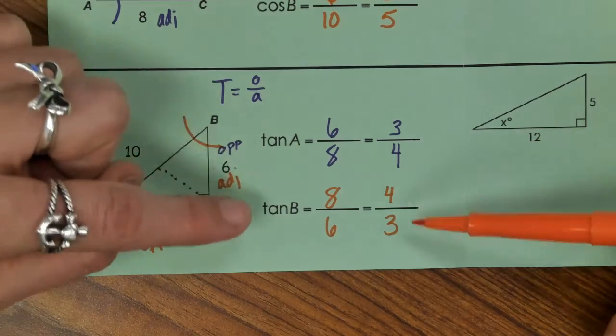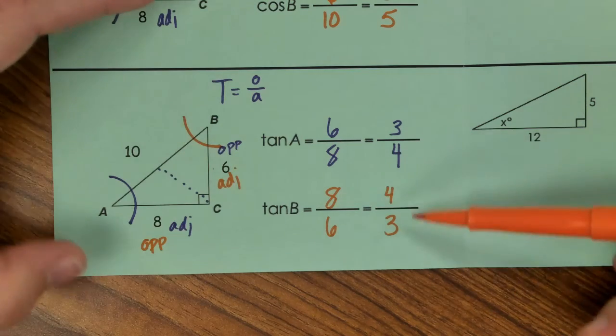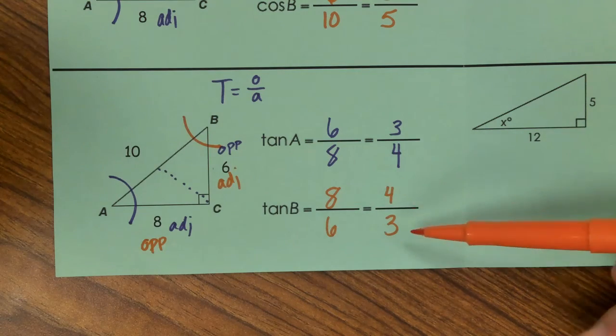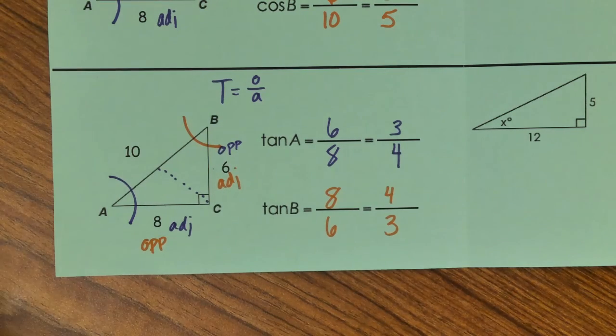And we've talked about with tangent, when you switch reference angles, you end up with the reciprocal: 3 over 4 and then 4 over 3. Very quick review on that one.